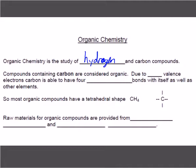Compounds that contain carbon are considered organic. Due to, how many valence electrons does carbon have? Four. Four makes it very unique. Carbon is the best sharer on the periodic table. It's always forming bonds. They are able to have four covalent bonds with itself as well as other elements.